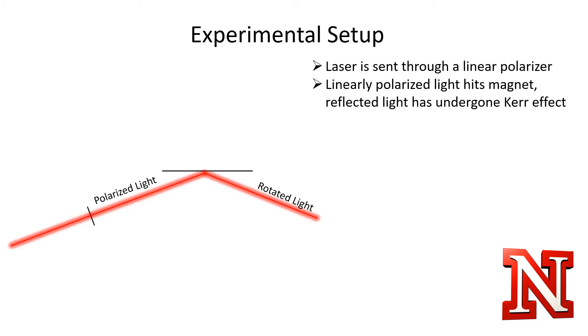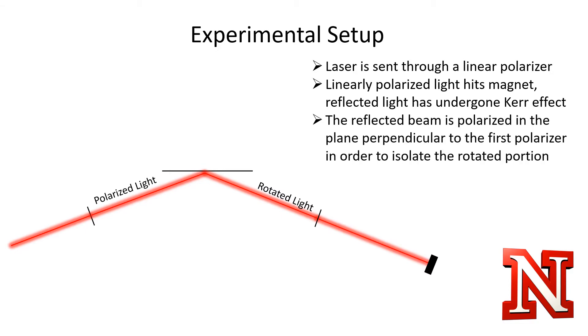The reflected light is sent through a second linear polarizer, arranged to polarize perpendicular to the first one. Since the light would ordinarily have no field perpendicular to the plane of polarization after going through the first polarizer, it should be completely blocked off by the second polarizer. Any light that is passing through must be the result of the Kerr effect slightly rotating the wave out of plane, and so the intensity of the light that passes through the second polarizer must be proportional to the Kerr effect and, by extension, the material's magnetization.